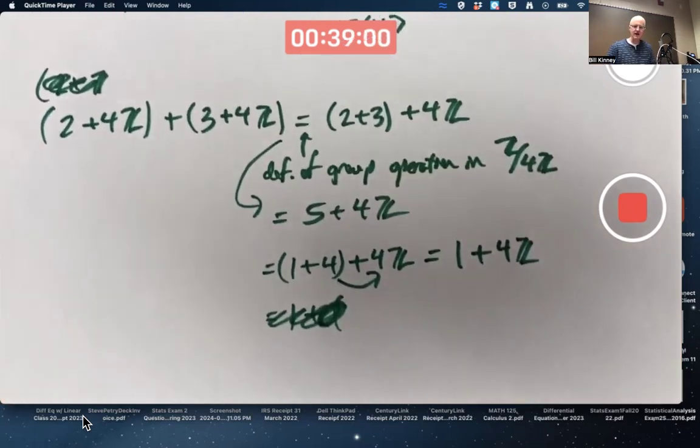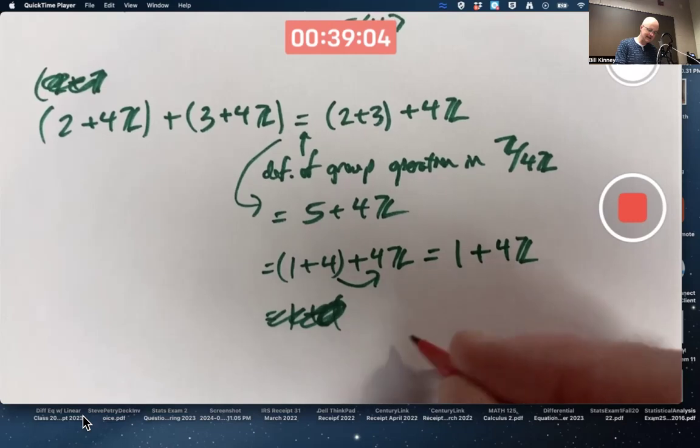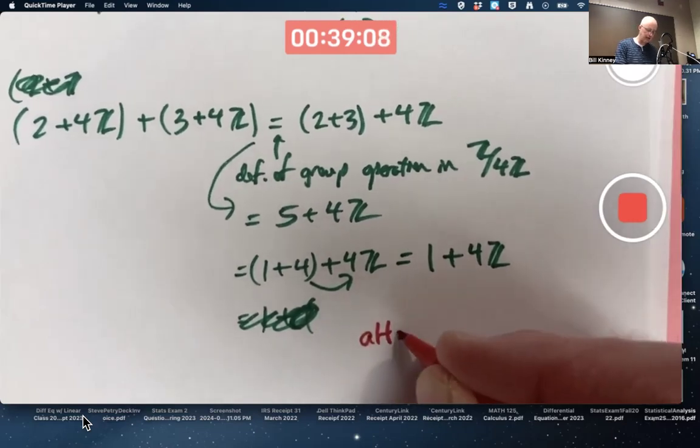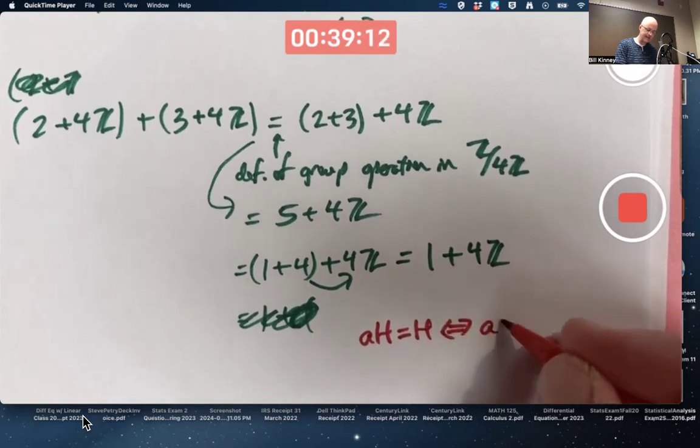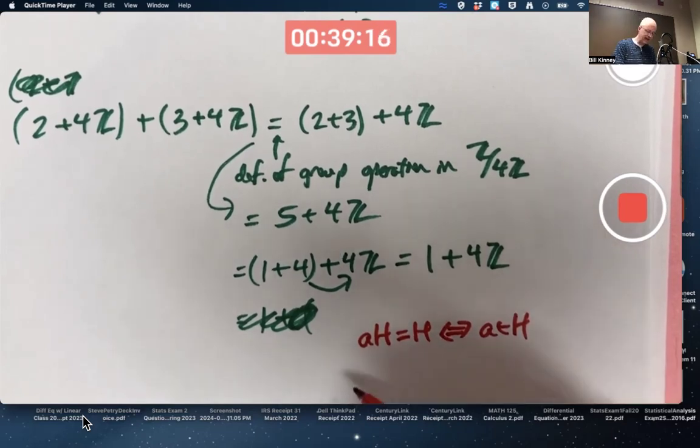Essentially, what we're using there is this coset property. aH equals H if and only if a is an H.